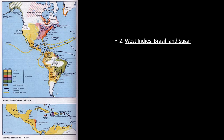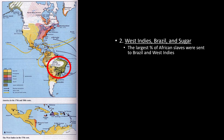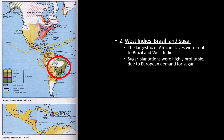Contrary to what many think, the majority of African slaves were not brought to Virginia or the American South. The majority were brought to two places: Brazil, owned by the Portuguese, and the West Indies. The largest percent of African slaves were sent to Brazil and the West Indies, not North America. Although later many African slaves would be shipped to North America, the majority were always in South America and the West Indies.